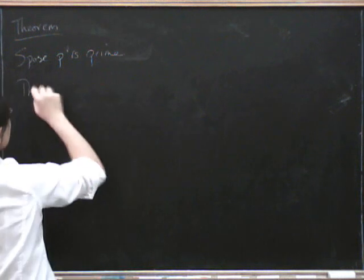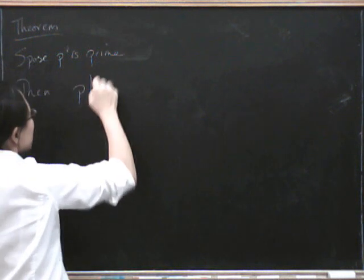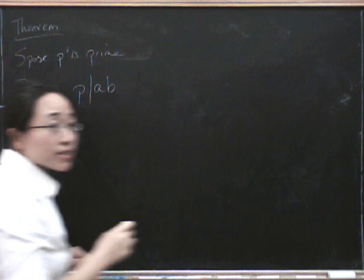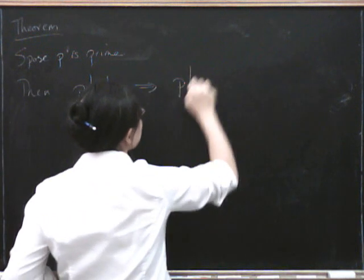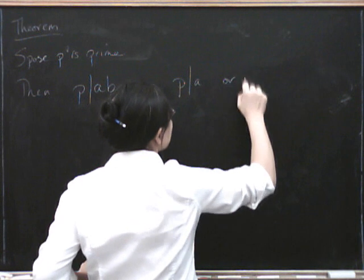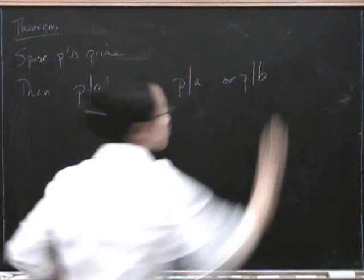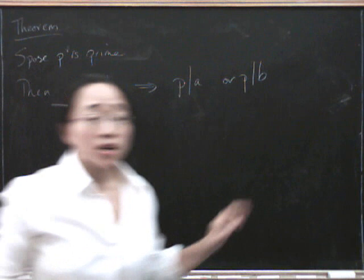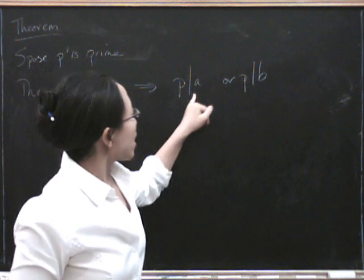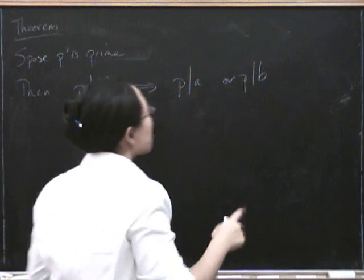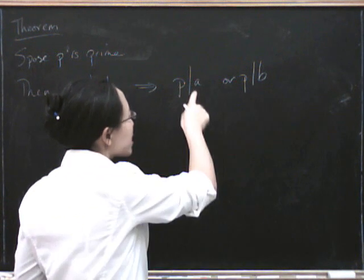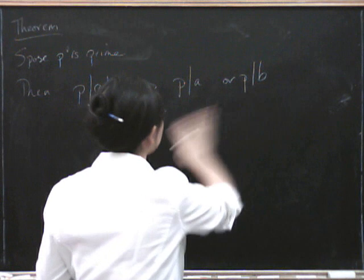Then, if P divides some number A times B, then either P divides A or P divides B. And that's the kind of or that means either this is true or this is true or both is true. So what isn't possible is it's not possible for P to divide neither A nor B.